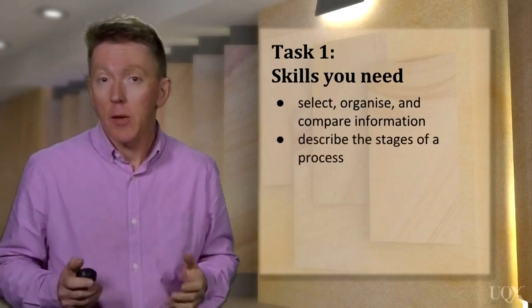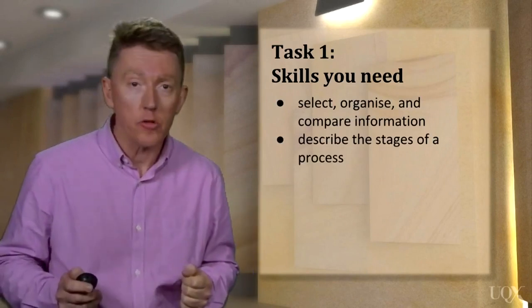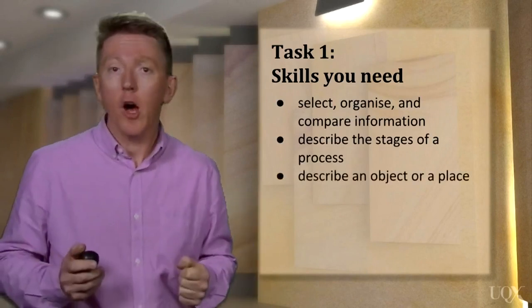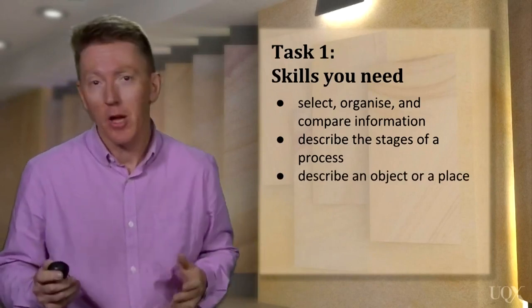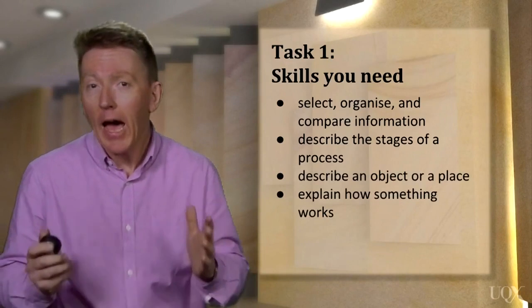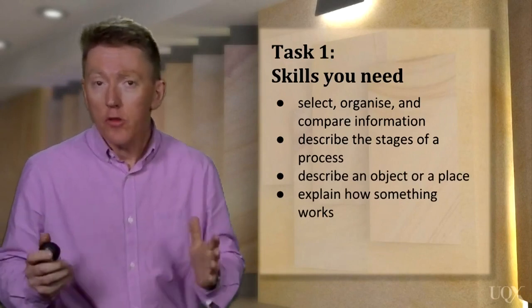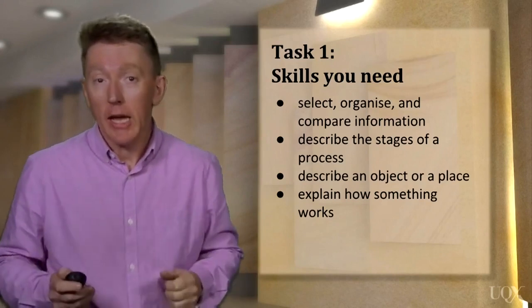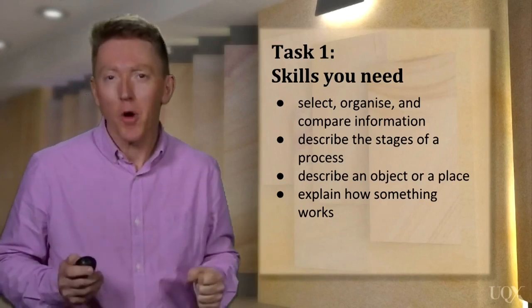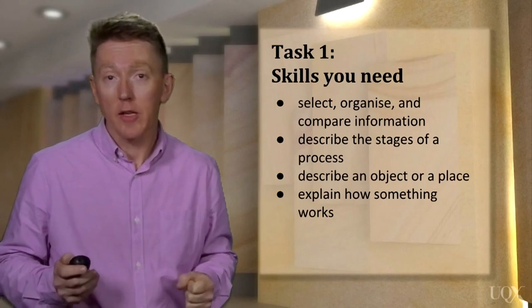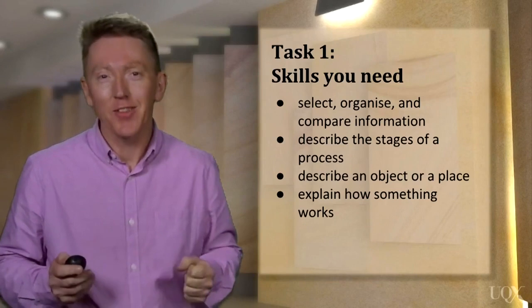You may need to be able to describe the stages of a process, or describe an object or place, or perhaps explain how something works. You'll do this using the information you can see in the visual. Throughout the rest of the writing module of the IELTS Academic Course, you will have an opportunity to practise these skills.